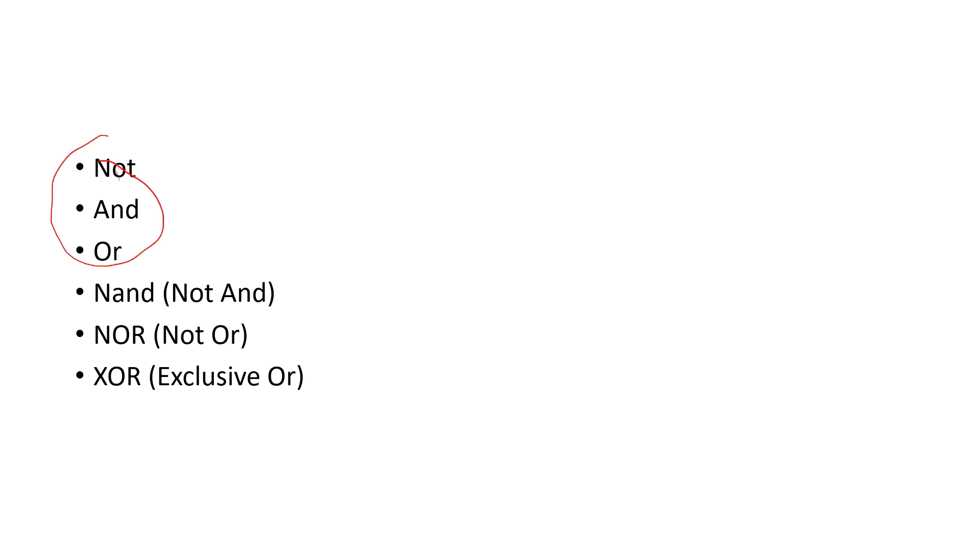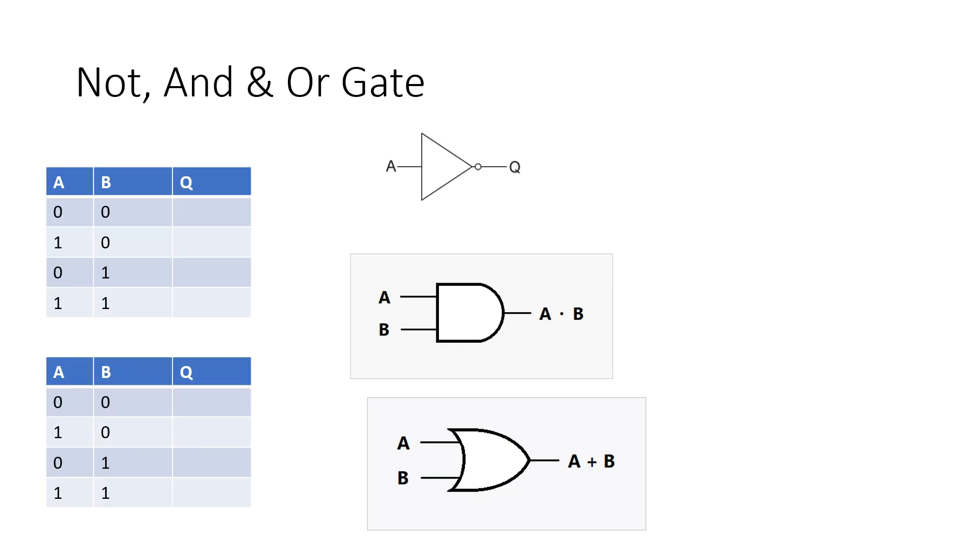Because with these gates you can build the rest of them, we will talk about six gates total. Let's look at the first three gates, which I call the main gates. The NOT gate is the simplest of all gates. When input is 0, output is 1. When input is 1, output is 0.